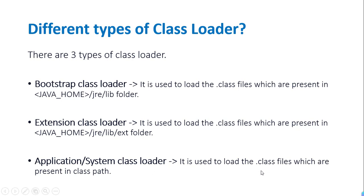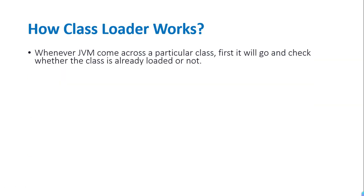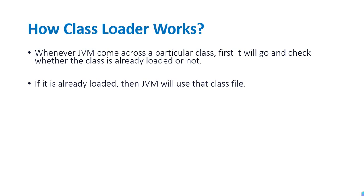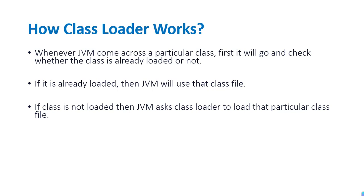The third is the Application or System class loader — it is used to load the .class files which are present in the classpath. How class loading works: whenever the JVM comes across a particular class while running the program, it first checks whether this class is already loaded in the memory or not. If it is loaded, the JVM will use that class file and continue execution. If the class is not loaded, the JVM will ask the class loader to load that particular class.